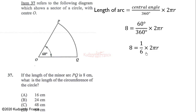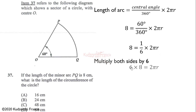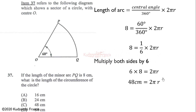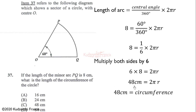We maintain 2πr and multiply both sides by 6 to get 6 × 8 = 48 centimeters. So the circumference of the circle is 48 centimeters, and that is the correct answer.